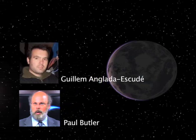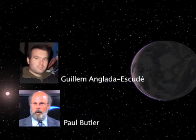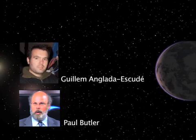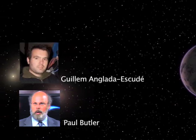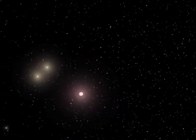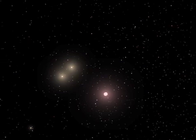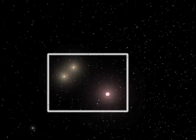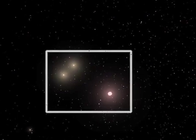An international team of scientists led by Carnegie's Guilhem Englada Escudet and Paul Butler has discovered a potentially habitable super-Earth orbiting a nearby star. The star is a member of a triple star system and has a different makeup than our sun, being relatively lacking in metallic elements.